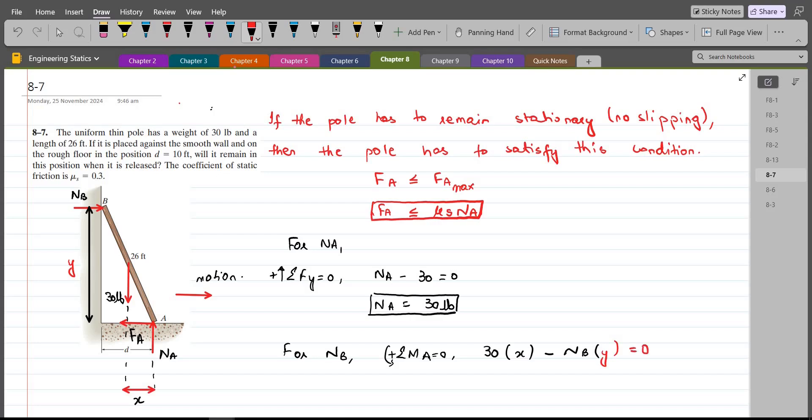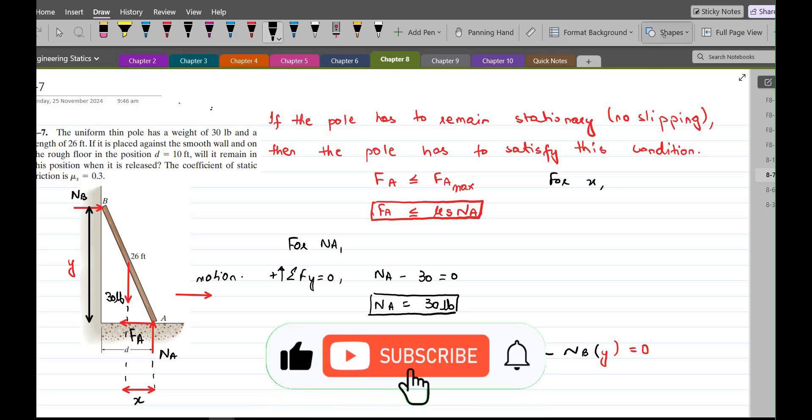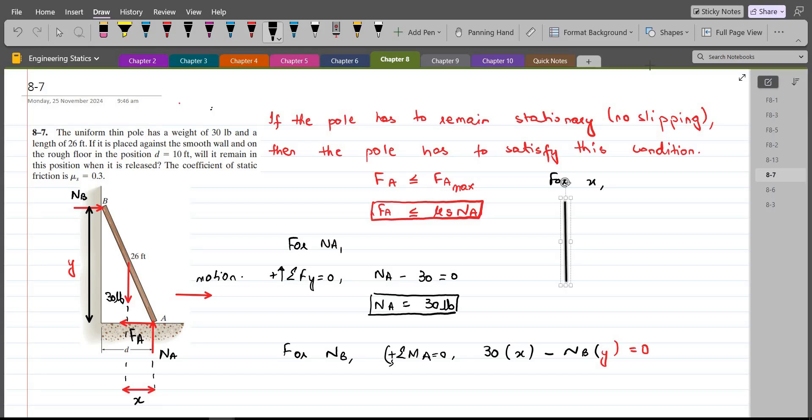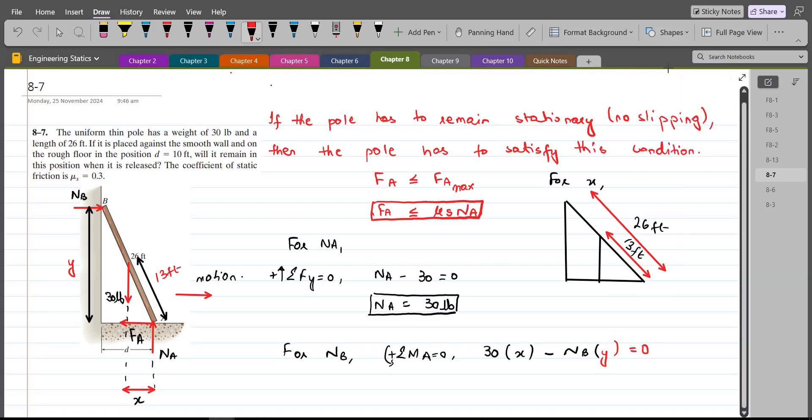So, now we have to calculate the values of x and y. For x, we can use the equivalent triangles. If I draw the figure separately, we know that the weight is acting at the middle of this uniform pole. So, this distance is 13 feet, which is same as this distance here and the length of this pole is 26 feet. This right here is 26 feet. This is 13 feet and the base of the larger triangle is given as the distance d and the smaller triangle has a base of x which we have to find out.